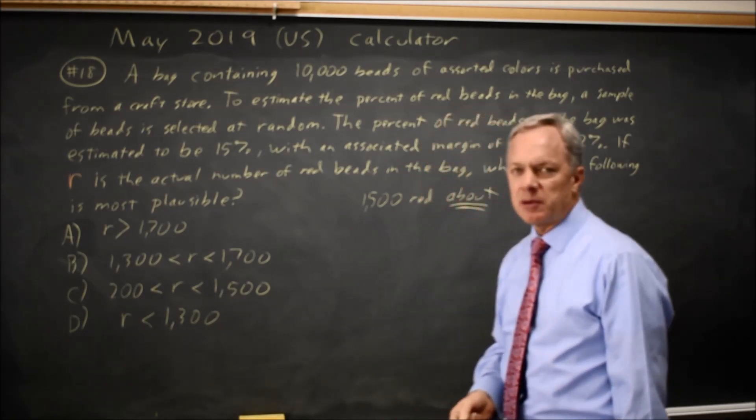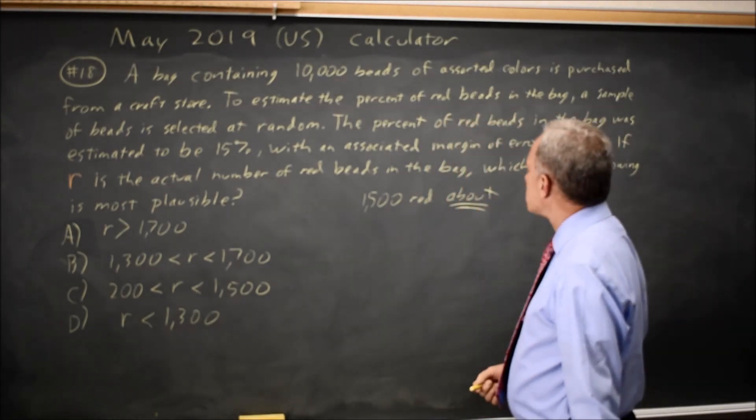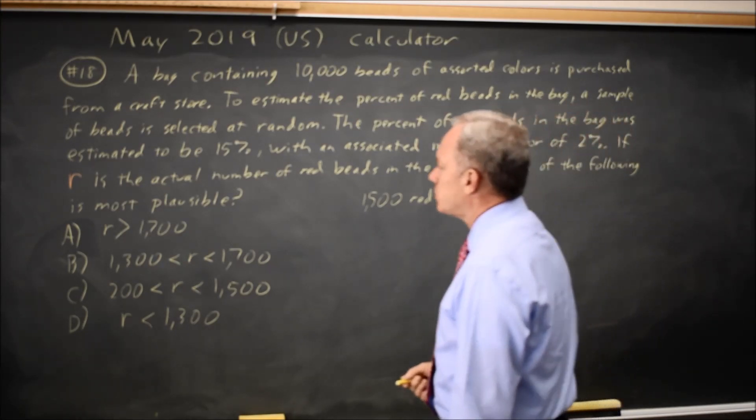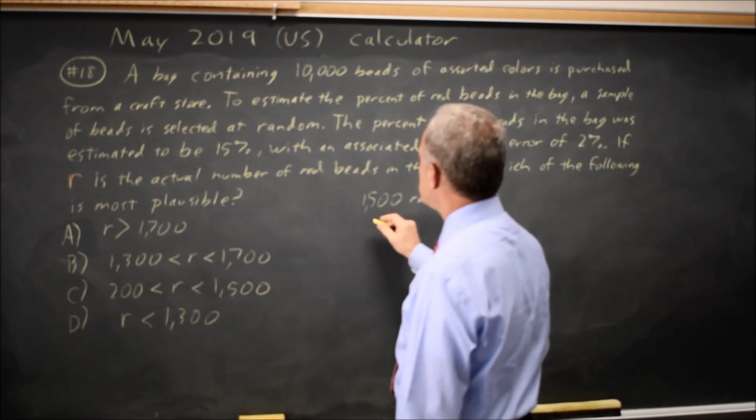But because this is from a sample we've got some uncertainty and that uncertainty is described with a margin of error of 2%. 2% of 10,000 is 200.